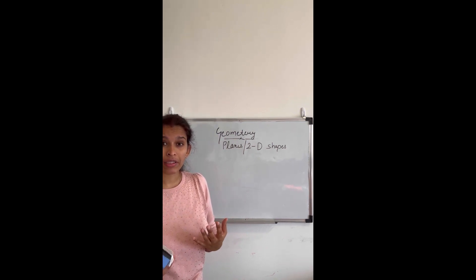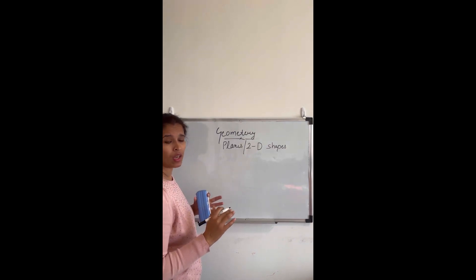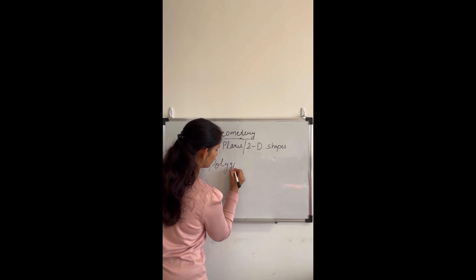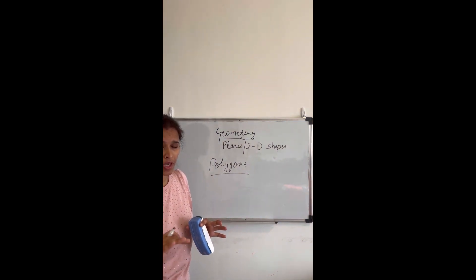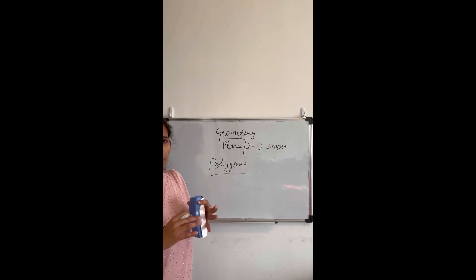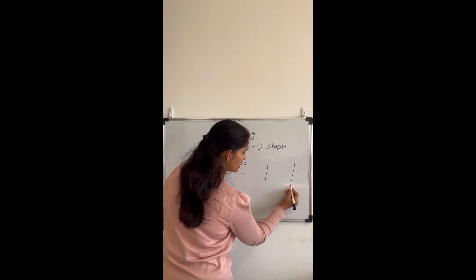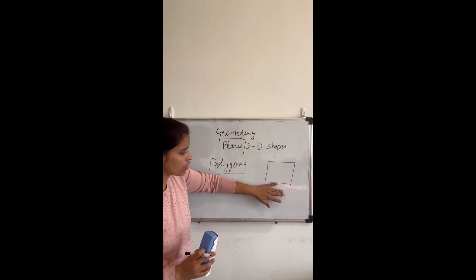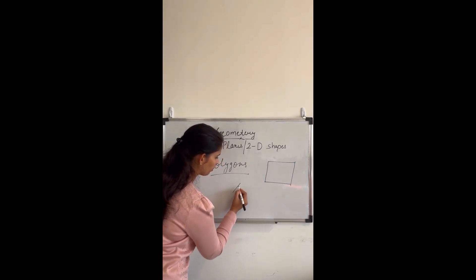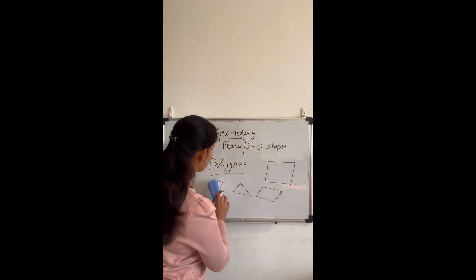The basic shapes in planes or 2D shapes include circle, triangle, rectangle, square, and quadrilaterals. Except for the circle and oval, all shapes are called polygons. A polygon is made up of three or more line segments that do not cross each other — when three or more line segments meet without crossing, that is called a polygon.